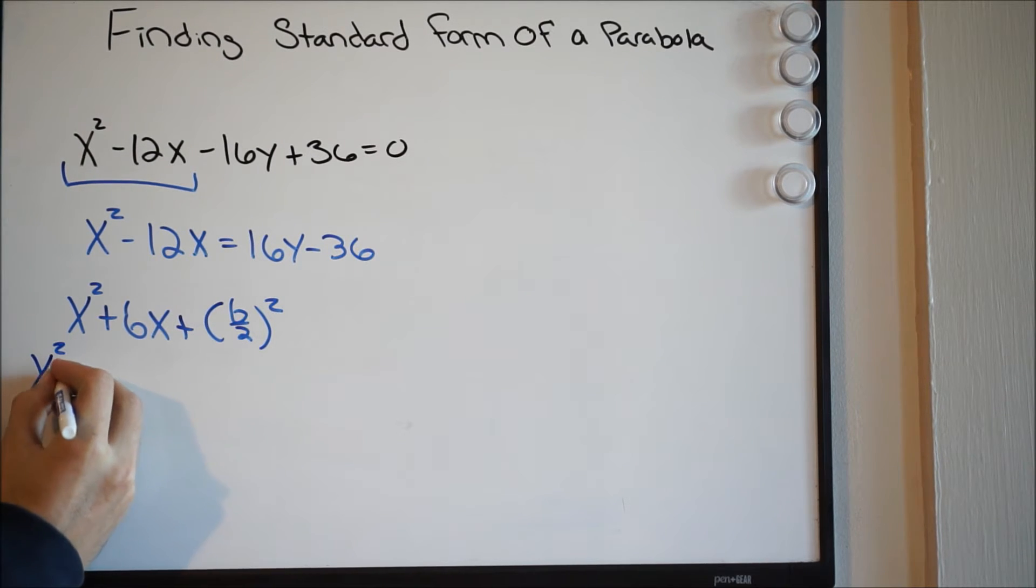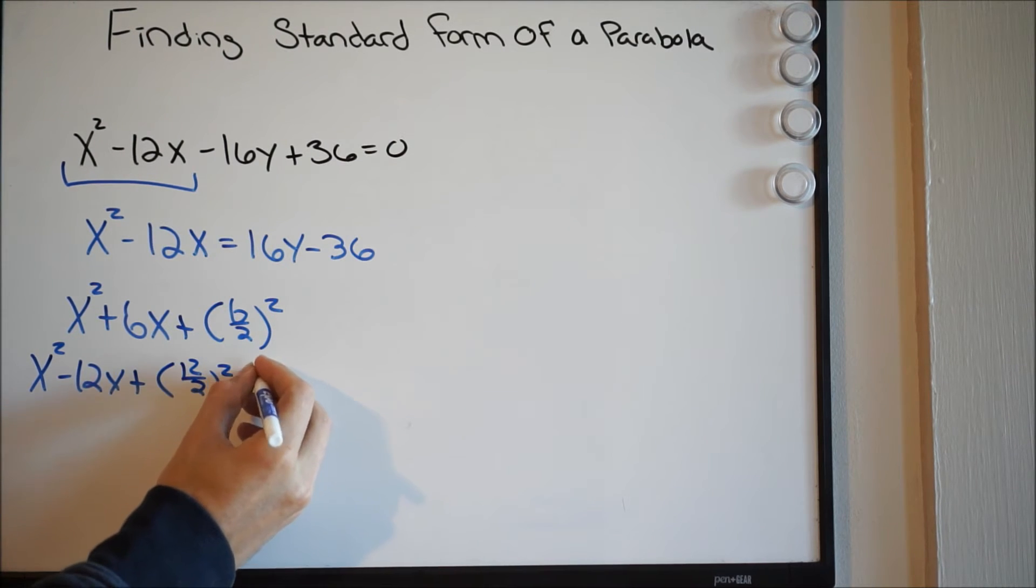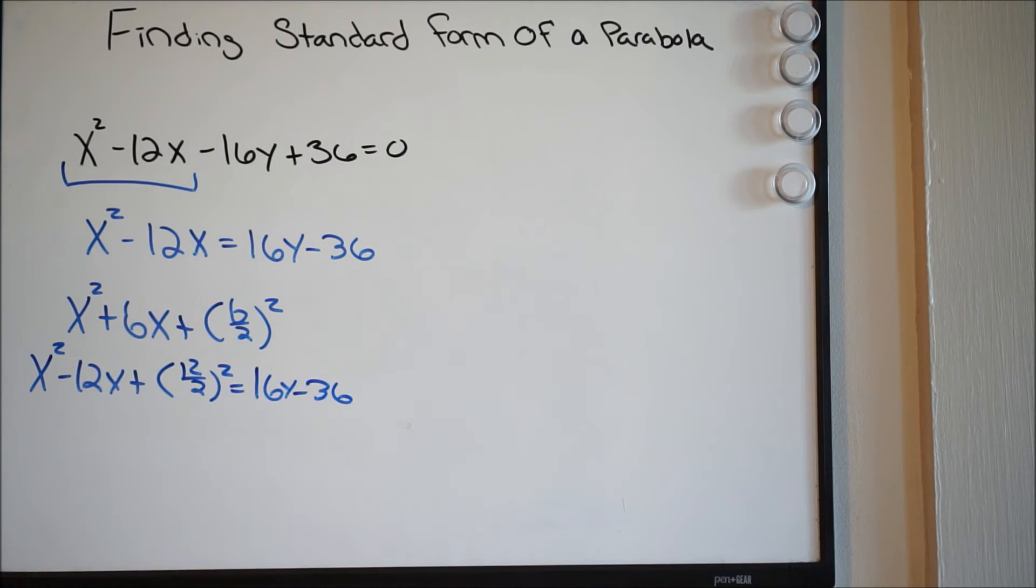We'll have x squared minus 12x, plus, in this case we have b over 2, in this case it's going to be 12 over 2, squared equal to 16y minus 36.